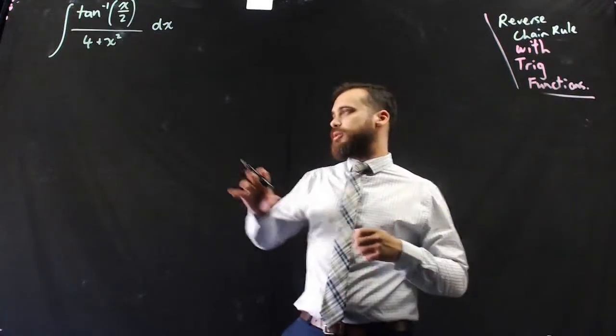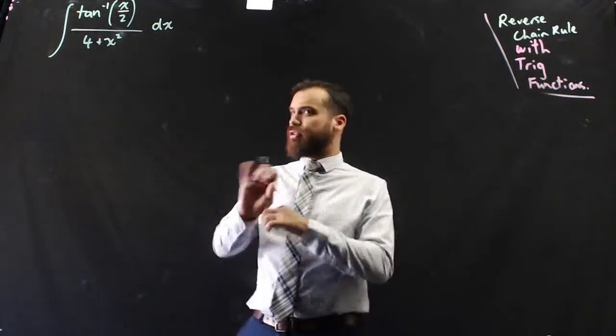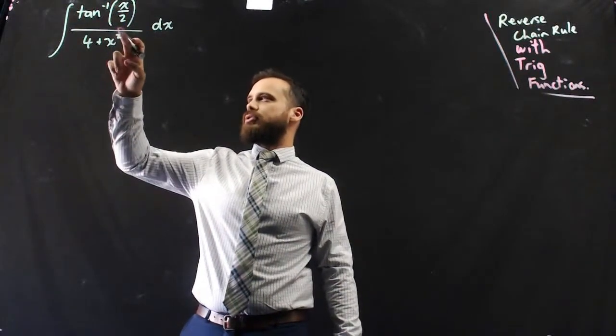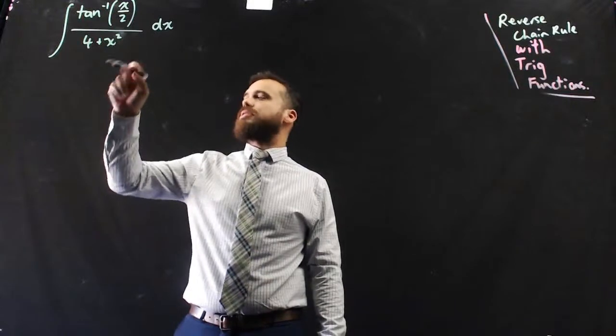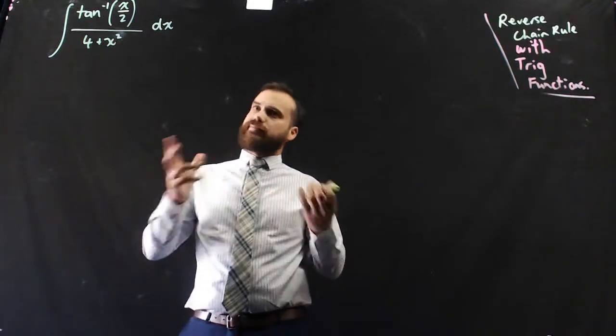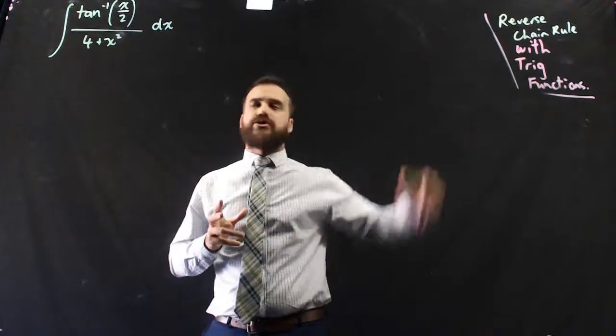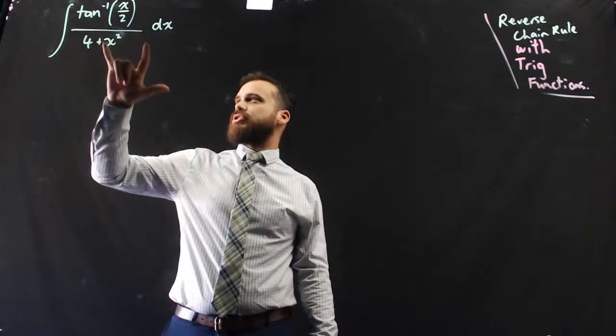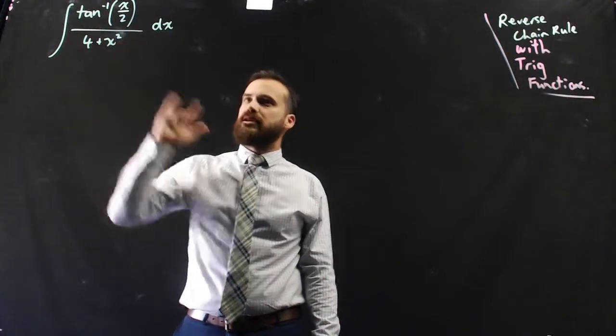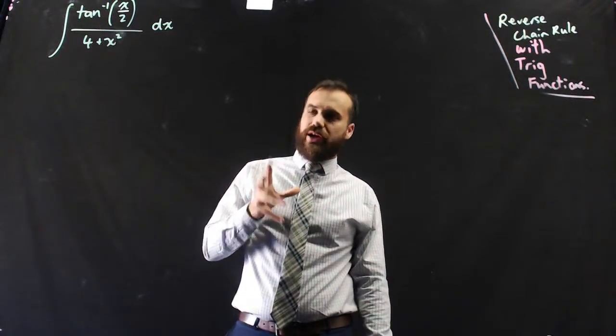Let's do another one. This one's really esoteric, really strange. It's the integral of tan to the negative 1, x over 2, over 4 plus x squared with respect to x. Now you're getting the hang of this reverse chain rule stuff. There's some relationship between this and this, some sort of derivative relationship between this and this, that you're supposed to be able to recognize.